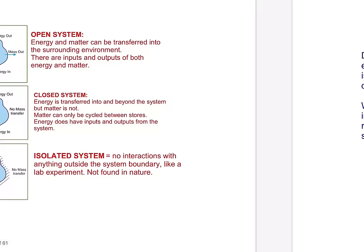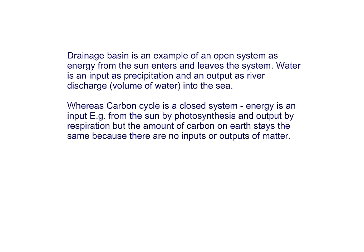An isolated system means there are no interactions with anything outside of the system boundary — like a lab experiment; we wouldn't typically find an isolated system in nature. Applying these to real life: the drainage basin is an example of an open system, because energy from the sun can enter and leave, water enters as precipitation and is outputted as river discharge.